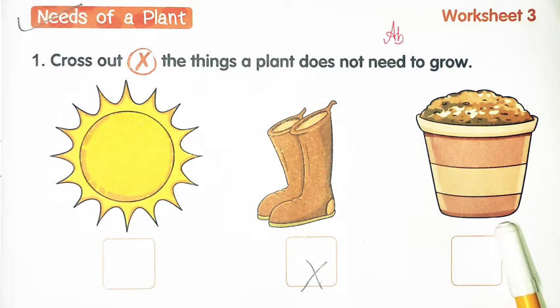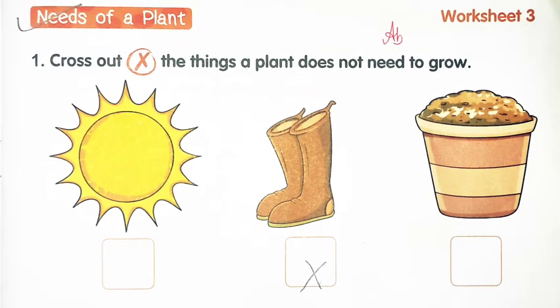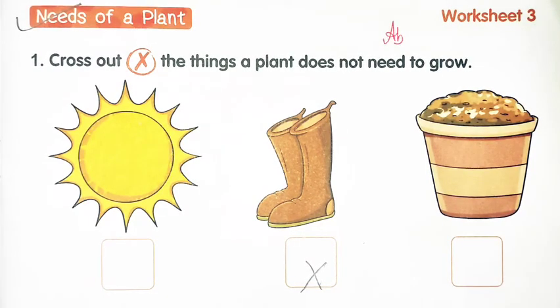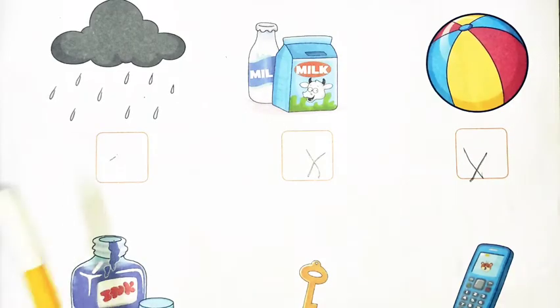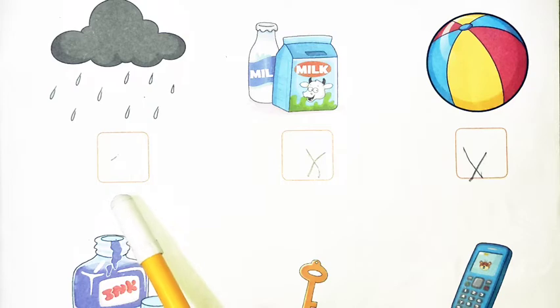Third is soil. Yes, plants need soil to grow, so take it. Next one is rainwater. Yes, plants need water to grow, buddies, so we will keep it.